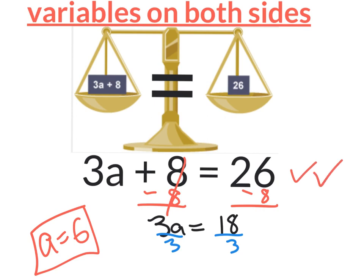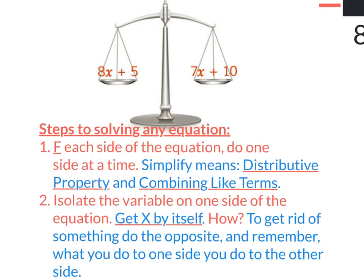You can do this double-check on every single equation on Friday's test. Now let's move on to what this section is actually about — when we have variables on both sides. On this one, we have 8X plus 5 equals 7X plus 10. When I ask where's the X, it's on both sides. We don't want a variable on both sides — the goal is to get X by itself on one side.